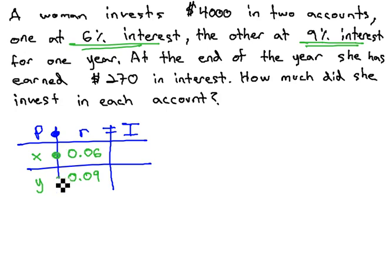To calculate the interest, we multiply the row across, and get .06x and .09y.